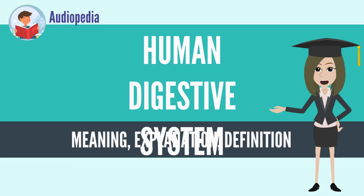The next stage starts in the mouth. Chewing, in which food is mixed with saliva, begins the mechanical process of digestion. This produces a bolus which can be swallowed down the esophagus to enter the stomach, where it is mixed with gastric acid.